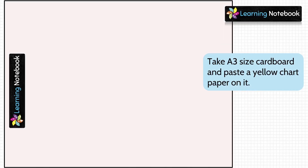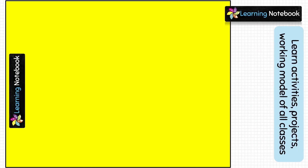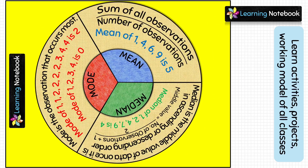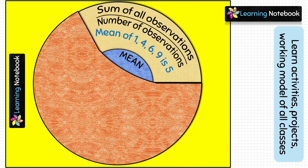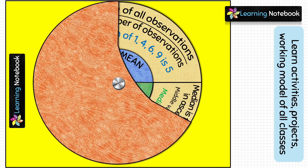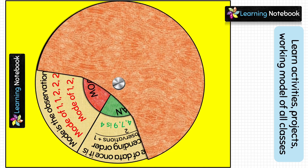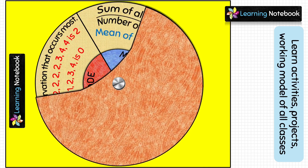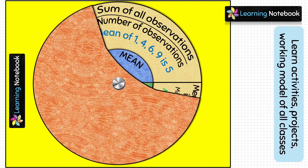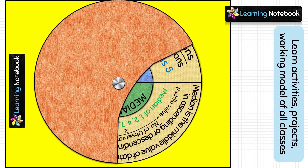Now we have made all the preparations for our working model, so let's assemble it. Take one A3 size cardboard and paste one yellow chart paper on it. Place the yellow circle on the cardboard, then place the orange circle on top of the yellow circle. Match their centers and fix both of them on the cardboard using a nut and bolt. After fixing, you should be able to rotate the orange circle. Our working model of mean, median, and mode is now complete.